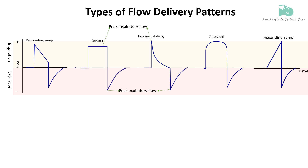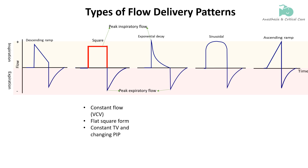The square flow waveform is characteristic of volume-controlled ventilation, where the ventilator delivers a preset volume of air at a consistent, unchanging rate throughout the inspiratory phase. This constant flow rate is represented by a flat, horizontal line on the flow-time waveform. At the end of inspiration, the flow rate suddenly drops to zero, shown by a sharp vertical drop, marking the transition from inspiratory to expiratory phase. This consistent flow ensures the full tidal volume is delivered, but can increase peak airway pressures, especially in patients with stiff lungs.